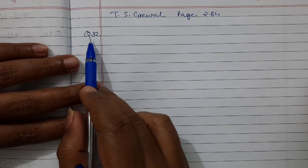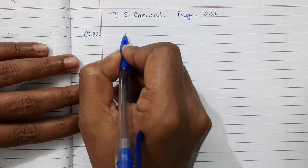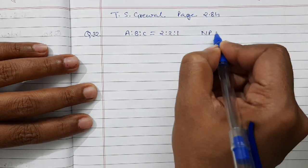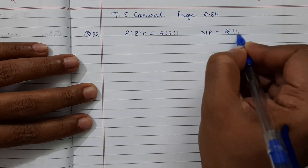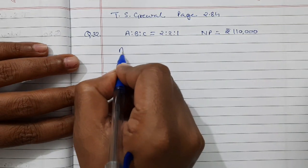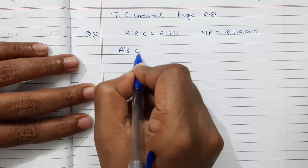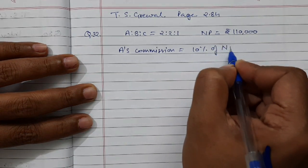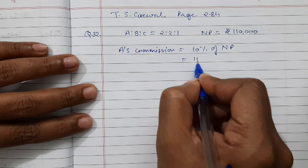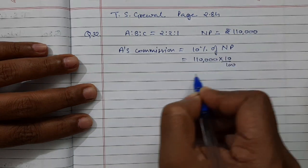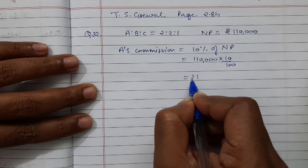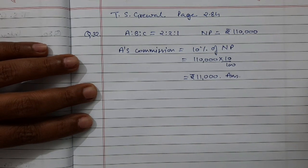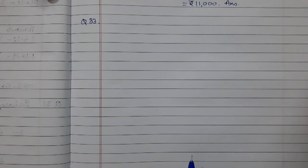Now next question — question number 32 from TS Grewal. It says that A, B and C are partners in the ratio 2:2:1. Net profit is Rs 1,10,000. A will get a commission equal to 10% of net profit. So A's commission is equal to 1,10,000 × 10/100, which gives A a commission of Rs 11,000. Very simple to calculate.